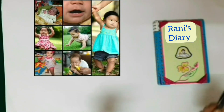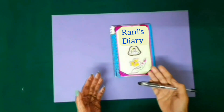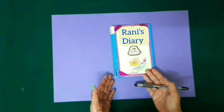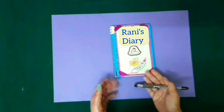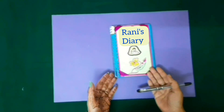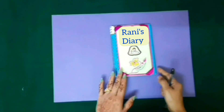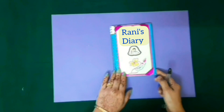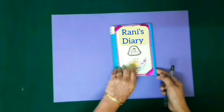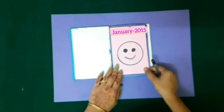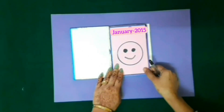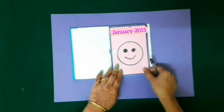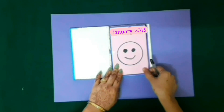Come students, let's learn to write down a diary and let's see how Rani has written her diary. Rani has beautifully decorated her diary and she started to note down all the activities of Kareena according to date and month.